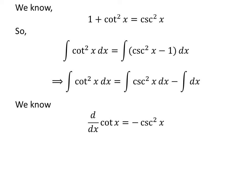So, minus cotangent of x is antiderivative of square of cosecant of x and x is antiderivative of 1.